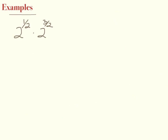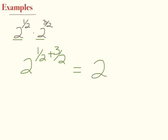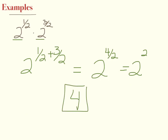Let's start with 2 to the 1/2 power times 2 to the 3/2 power. We have like bases, so we add our exponents: 2 to the 1/2 plus 3/2. That equals 4/2, and 2 to the 4/2 reduces to 2 squared, which is 4.